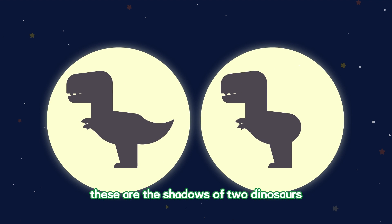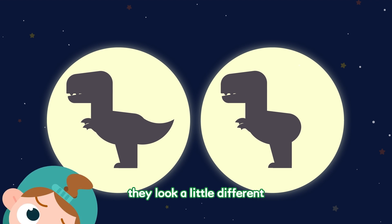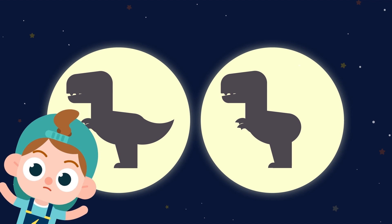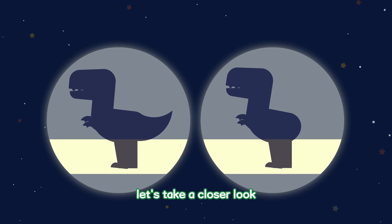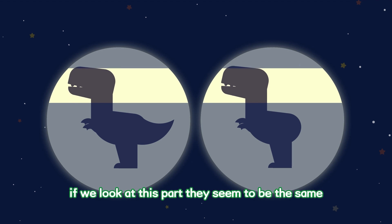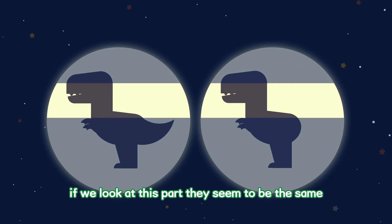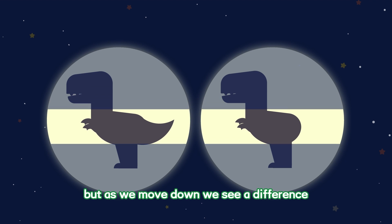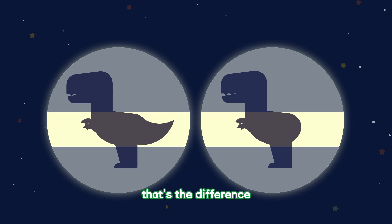These are the shadows of two dinosaurs! They look a little different! What's the difference? Let's take a closer look! If we look at this part, they seem to be the same! But as we move down, we see a difference! This one has a tail, and this one doesn't! That's the difference!